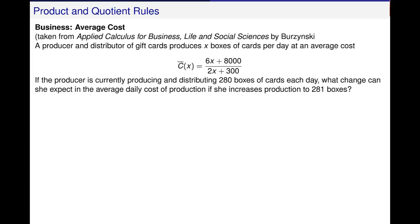given by this cost function with a bar over it, meaning it's the average cost. 6x plus 8,000 in the numerator and 2x plus 300 in the denominator.